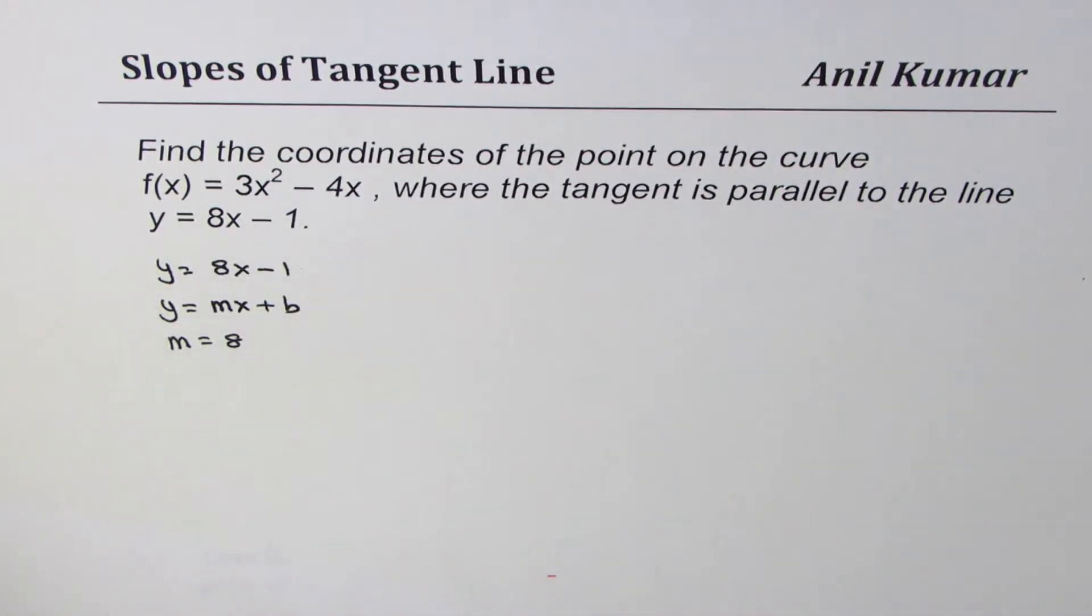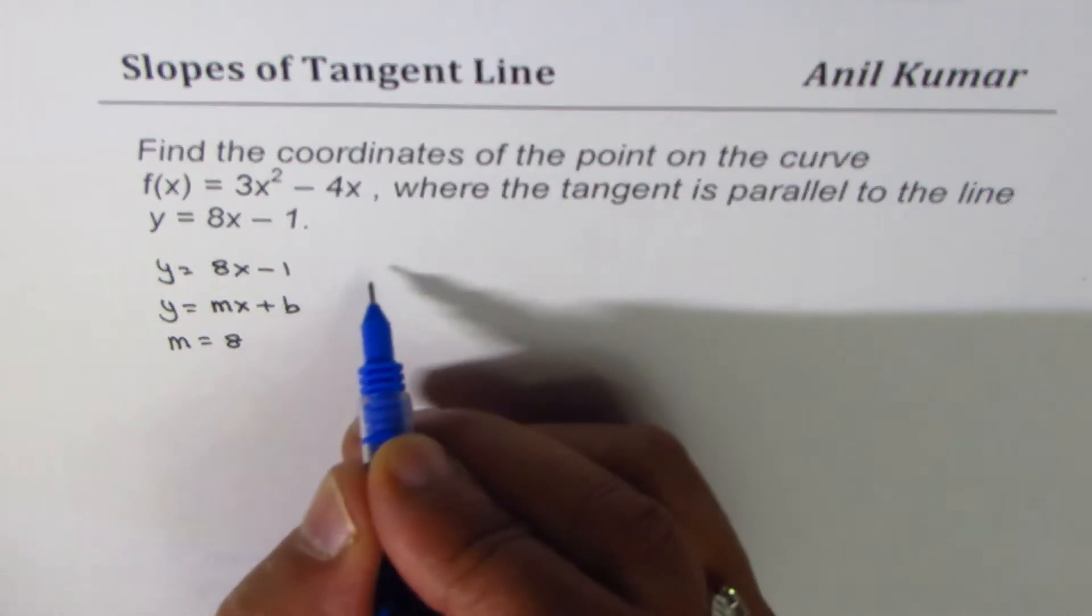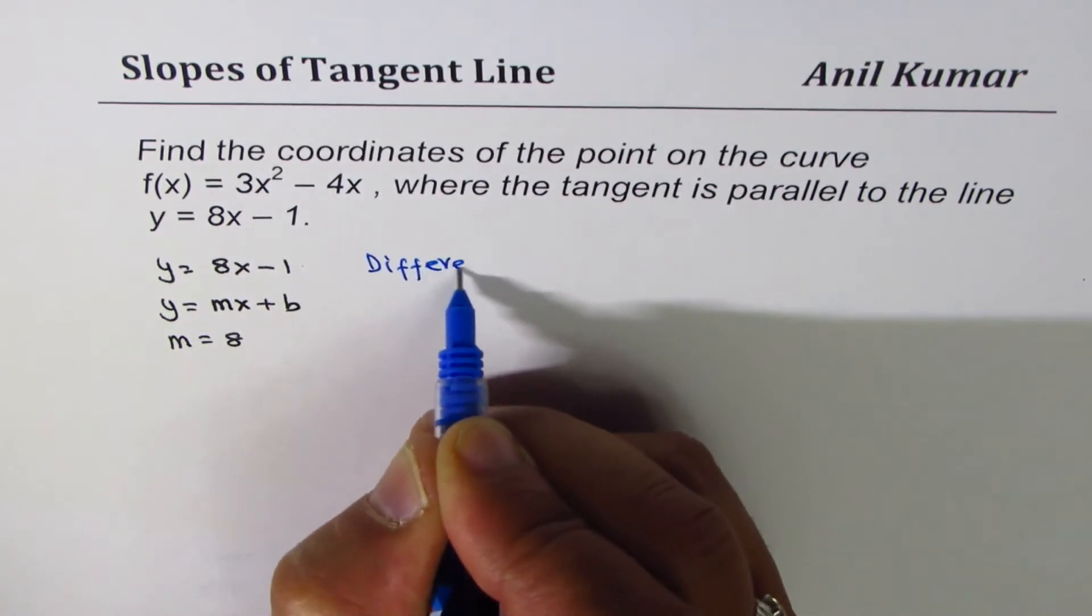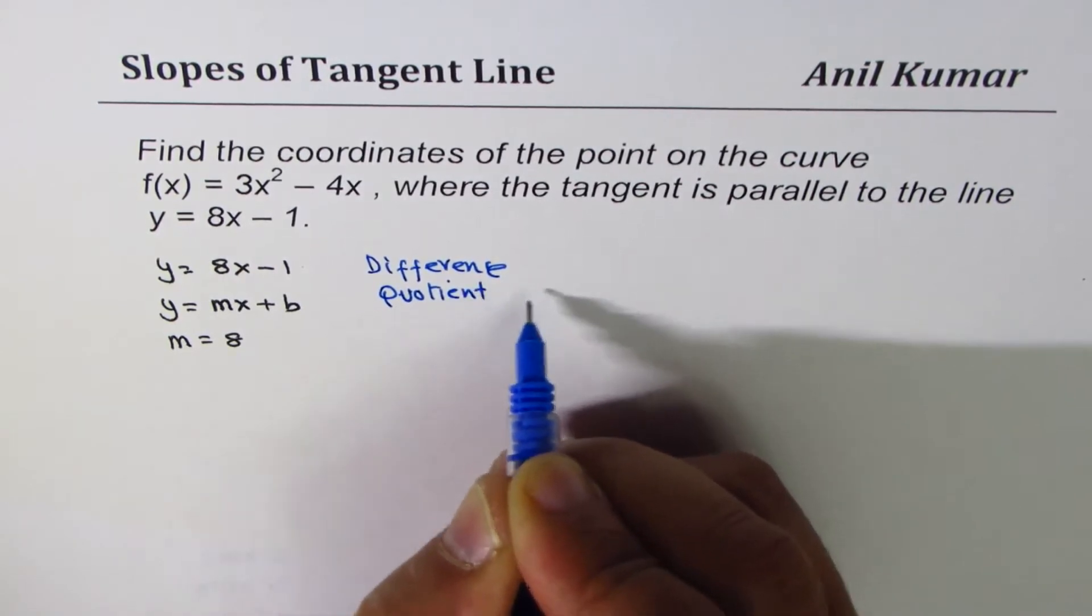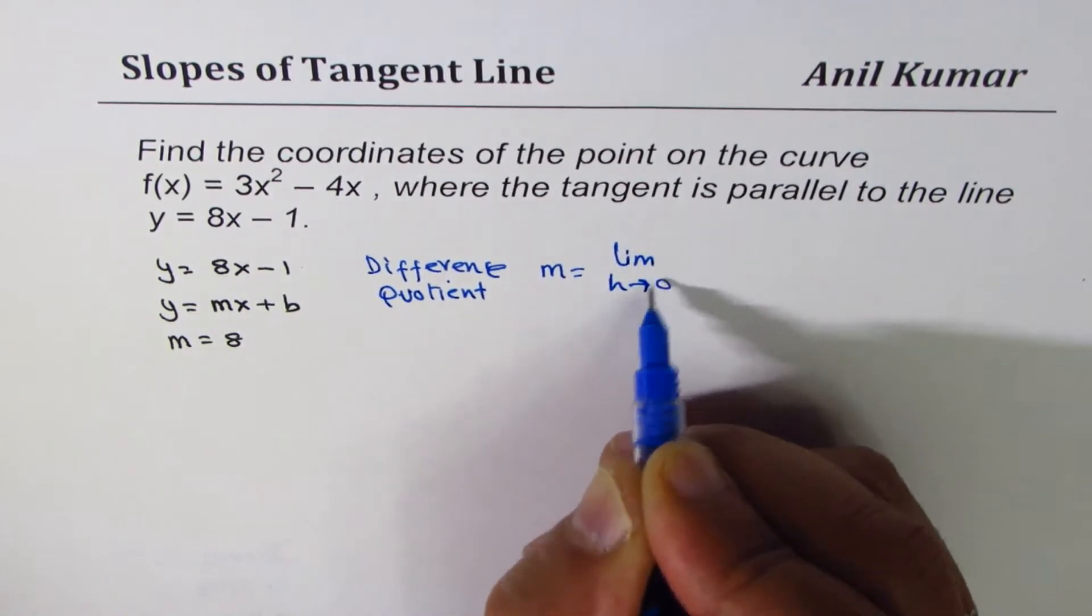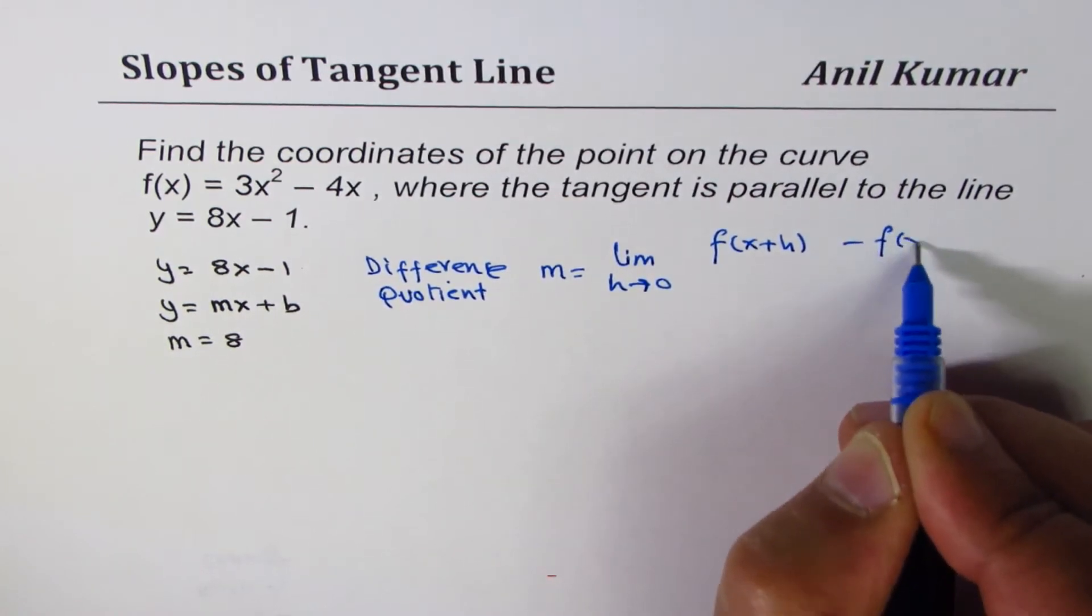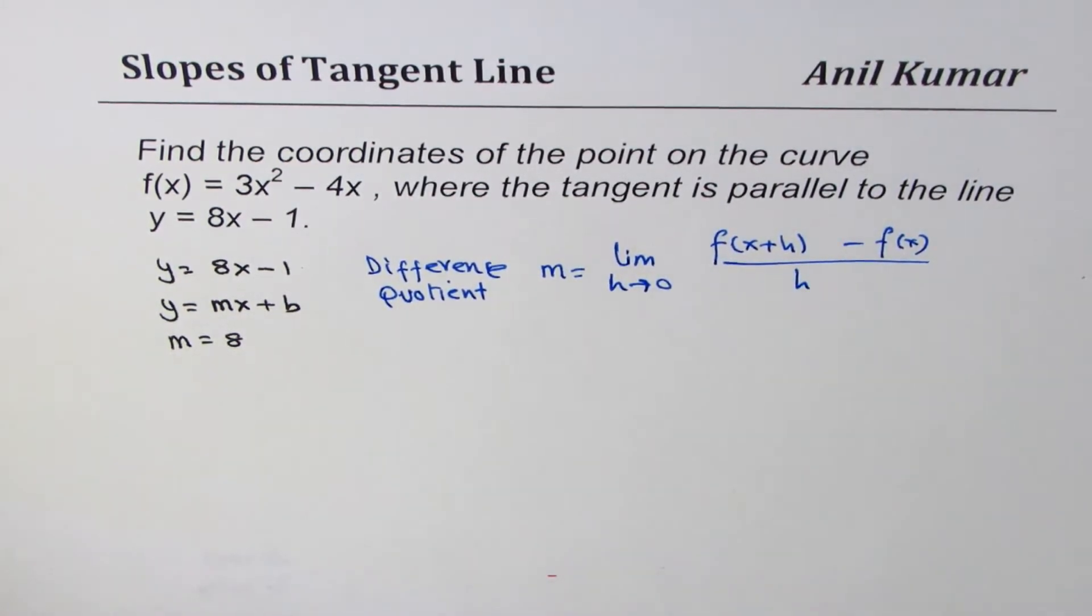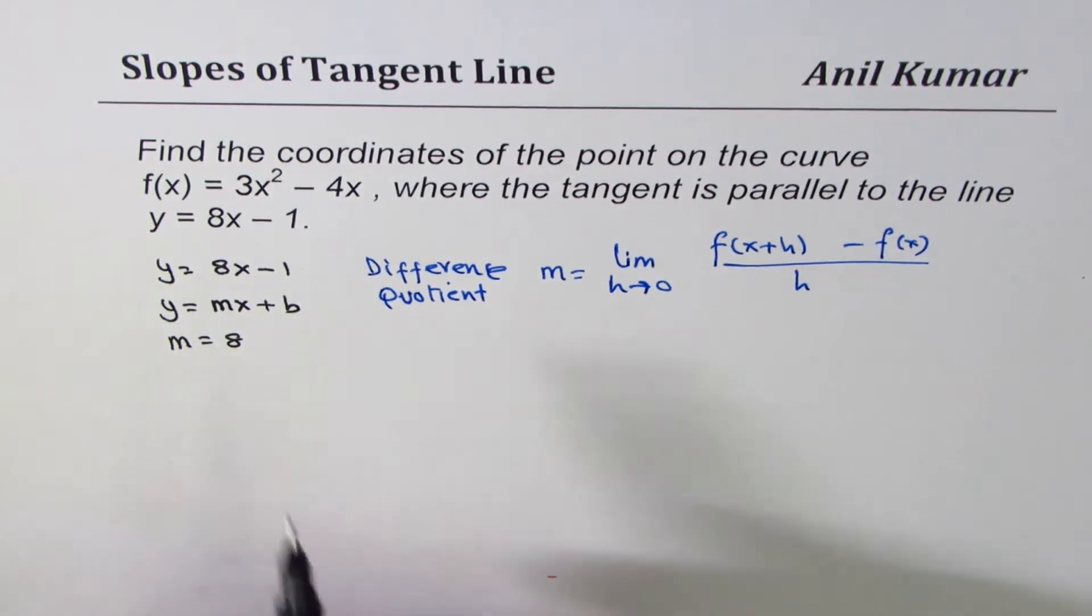Let's use the standard difference quotient formula. This formula will be applied to find the slope. The difference quotient formula gives m = lim(h→0) [f(x+h) - f(x)]/h. This formula will be used to find a general expression for the slope, then we'll equate it to find the particular point.